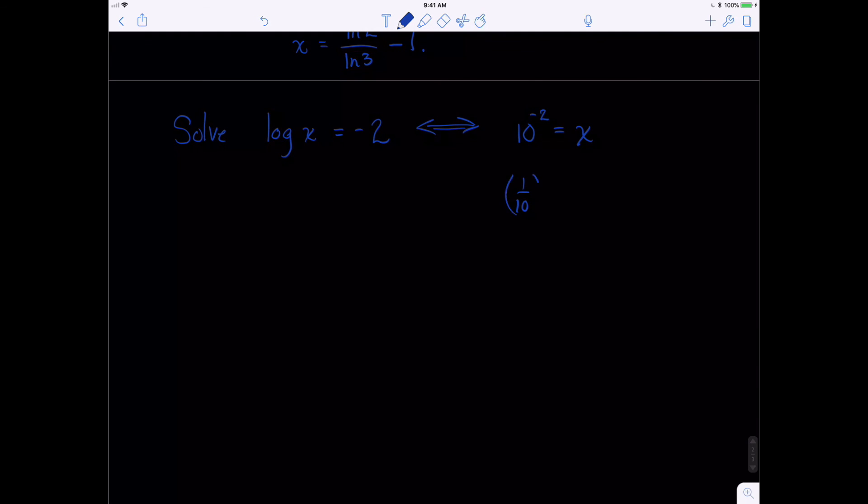1 tenth to the positive 2, but that's just 1 tenth squared. That's 1 squared over 10 squared. Well, that's 1 one-hundredth. So you could write your answer as the fraction 1 one-hundredth, or you could write it as the decimal of 1 one-hundredth. And that is how you can solve problems using exponents and logs.